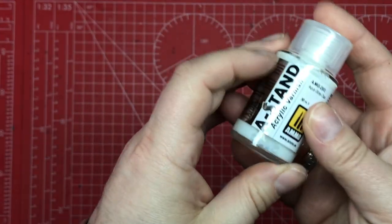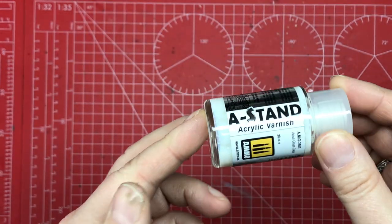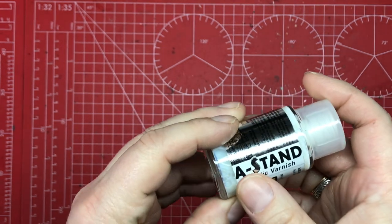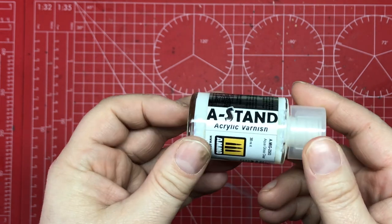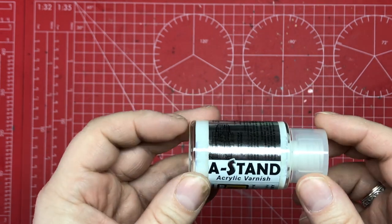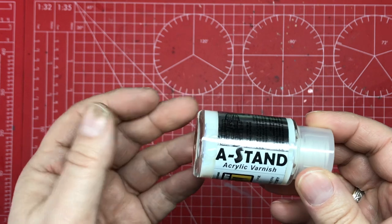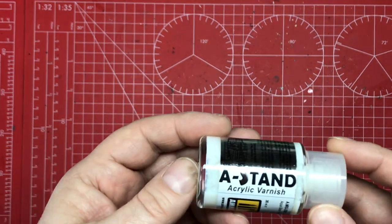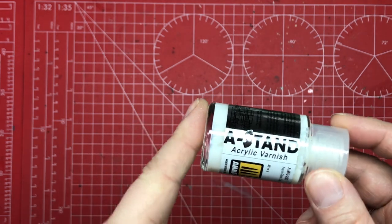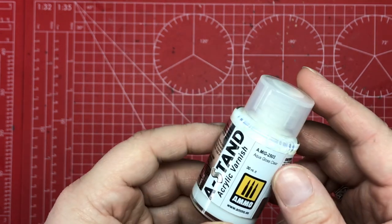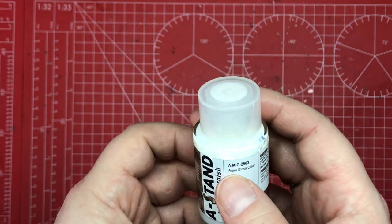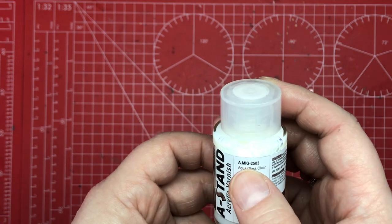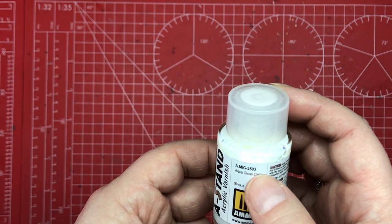A-Stand is a new product from Mig Ammo. A-Stand is their range of lacquer paints, so they have primarily metallics in the range, and this has just been released as a complementary varnish. But it is not a lacquer varnish, it's an acrylic varnish. It's called Aqua Clear Gloss, an acrylic varnish, reference number MIG2503.